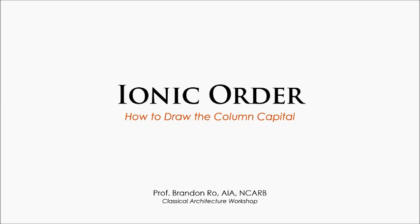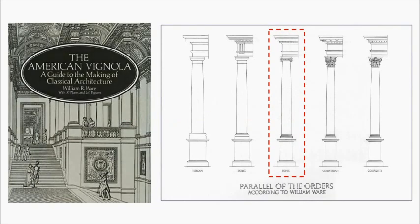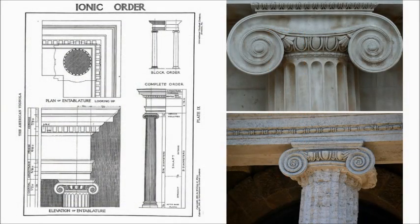Welcome back to the Classical Architecture Workshop. I'm Professor Brandon Rowe, and in this next video we'll continue our drawing from the previous. We'll be looking at the ionic order and specifically how to draw the column capital. As we've noted, we are using the American Vignola, a guide to the making of classical architecture by William Ware. The ionic order is unique in that it has these scroll-like features on the column capital itself, and we call these volutes.